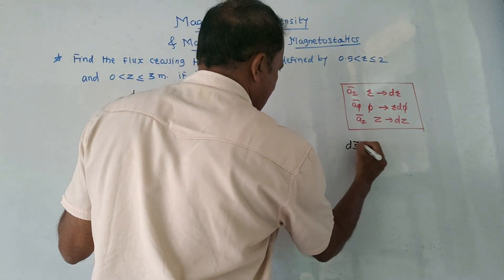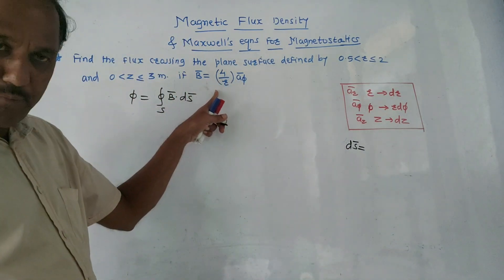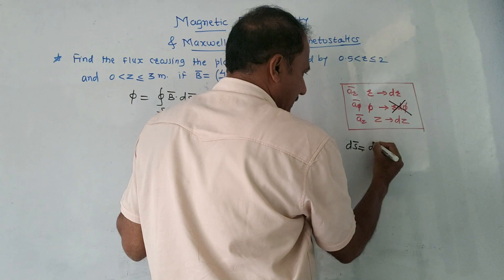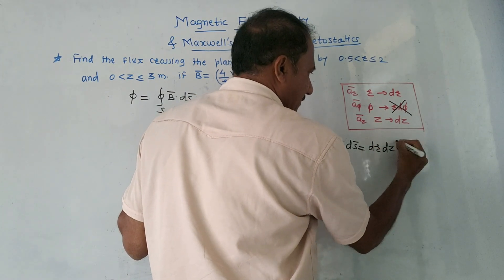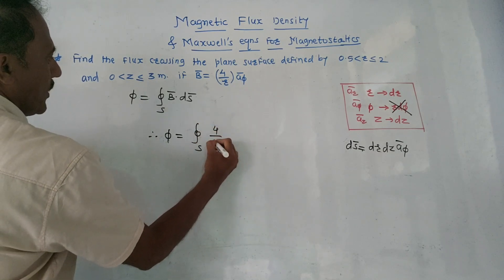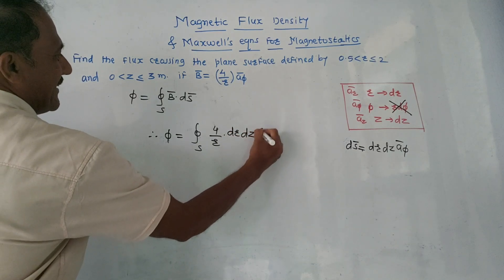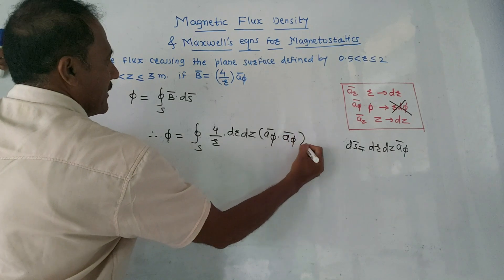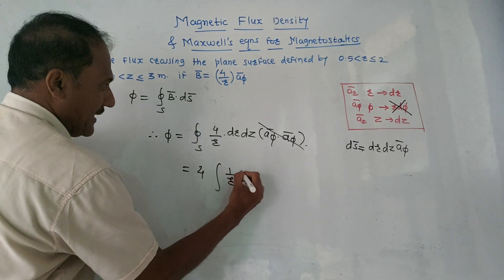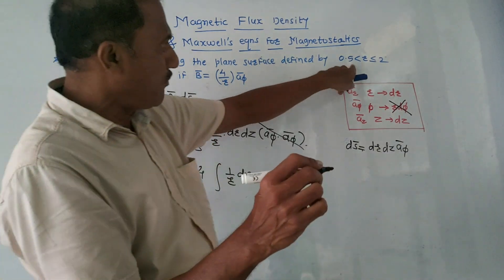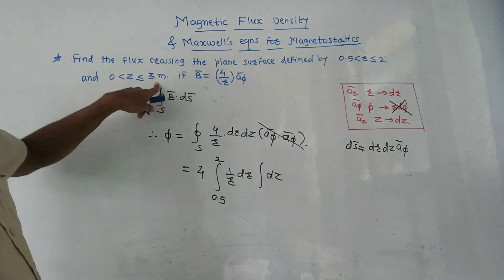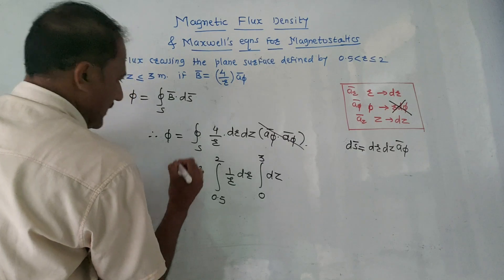Since the direction of B-bar is a-φ bar, the direction of dS-bar must also be a-φ bar. So we eliminate the φ-related component and dS-bar becomes dr dz in the a-φ direction. Putting these values into the integration: Φ equals the integral of (4/r) dr dz, with a-φ dot a-φ equals one. Taking 4 outside, we integrate 1/r dr with limits 0.5 to 2, and dz with limits 0 to 3.